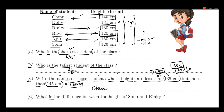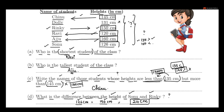What is the difference between the height of Sownu and Rinky? Sownu's height is 126 cm and Rinky's height is 150 cm. To find the difference, subtract 126 from 150, which gives 24 cm. So Rinky is 24 cm taller than Sownu.